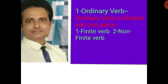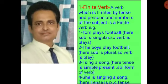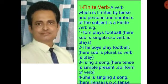Ordinary verb is further divided into two parts: number one, finite verb, and number two, non-finite verb. A verb which is limited by tense, persons, and numbers of the subject is a finite verb. For example: number one, Tom plays football — the subject is Tom, so the verb is 'plays'. Number two, the boys play football — the subject is boys and the verb is 'play'. Number three, I sing a song — the subject is I and the verb is 'sing'. Number four, she is singing a song — the subject is she, tense is present continuous, so the verb is 'singing'. In all the examples, the verb is changing according to tense, persons, and numbers, so it is called a finite verb.